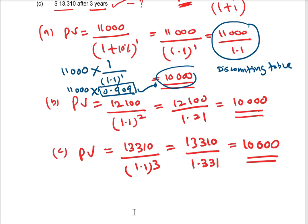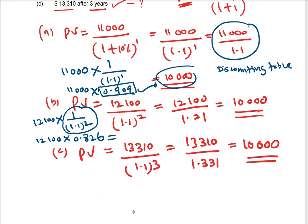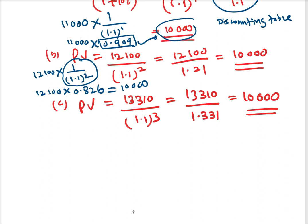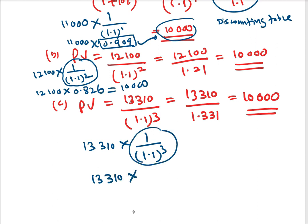In the same way, for twelve thousand one hundred: multiply by one over 1.1 to the power two. Taking the discounting factor, that will be 0.826, which gives you ten thousand. For the third scenario: thirteen thousand three hundred and ten times one over 1.1 to the power three — the discounting factor is 0.751 — gives you ten thousand.